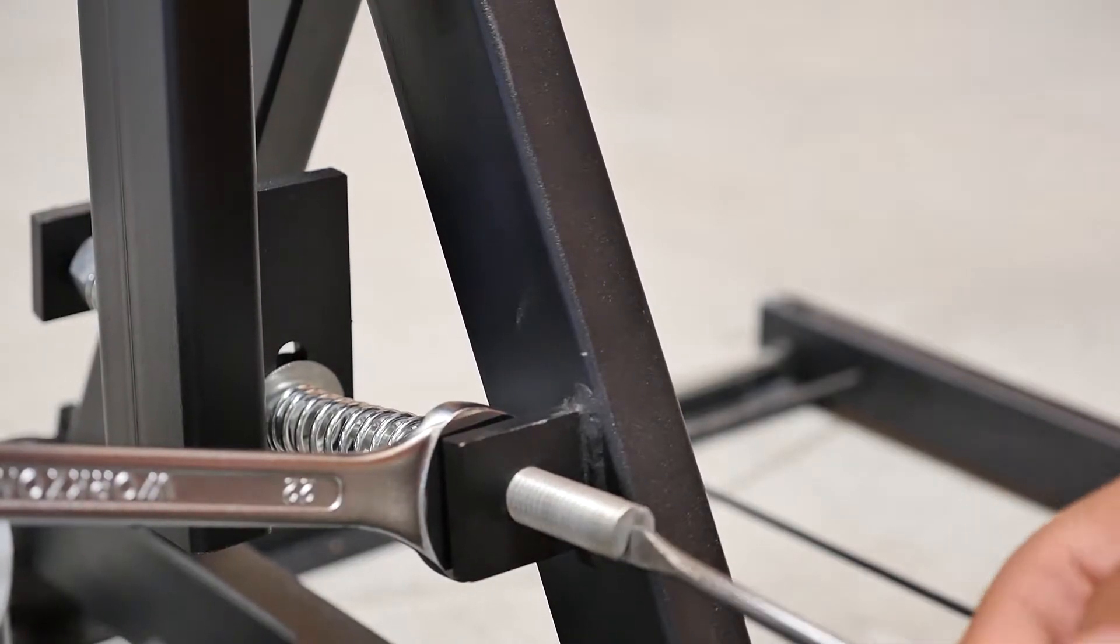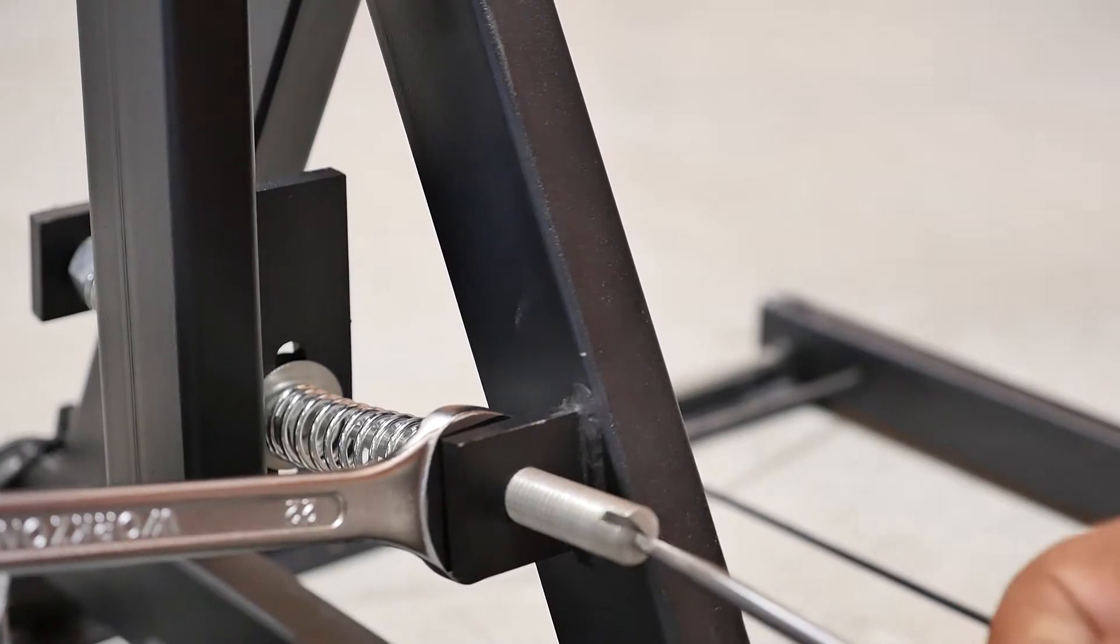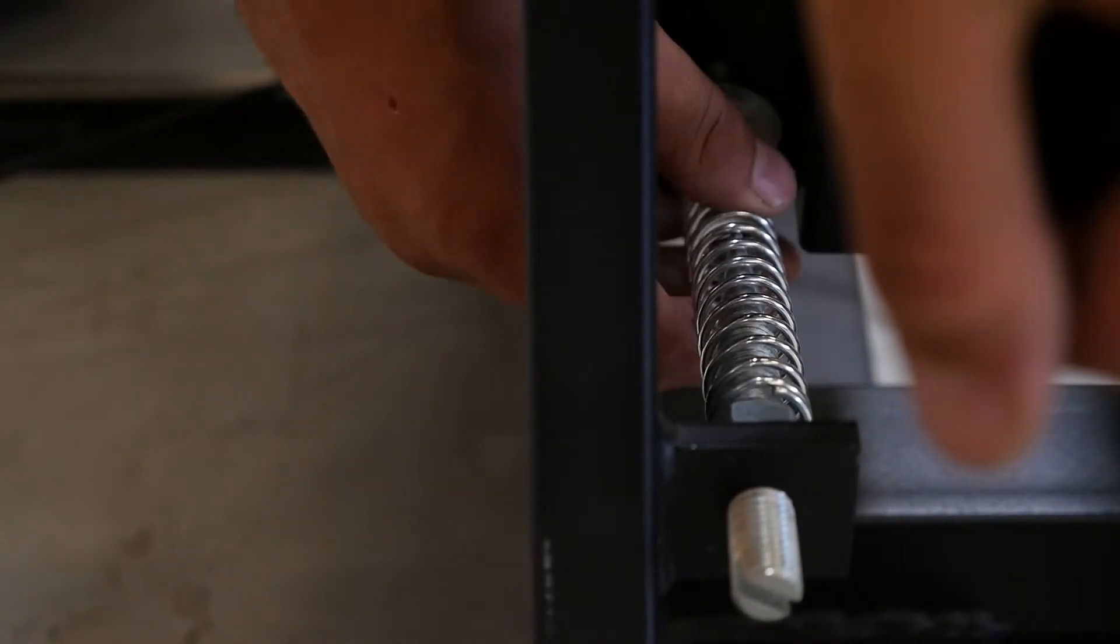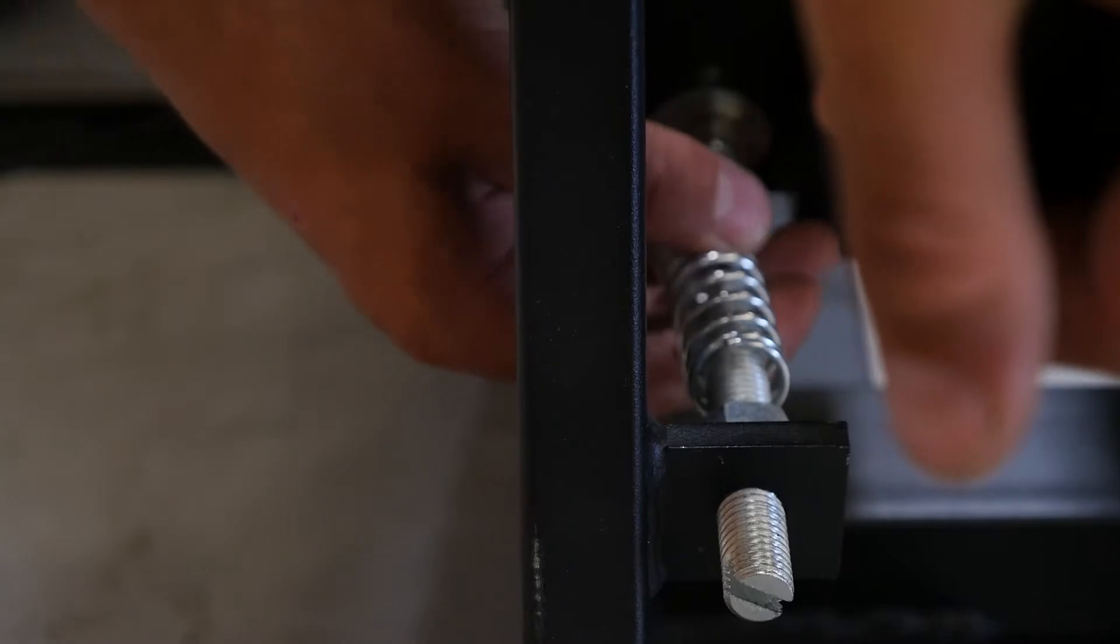You can also remove the springs completely, which is recommended for very experienced rowers when they do sculling. For sweep rowing, we always recommend to keep the springs in.